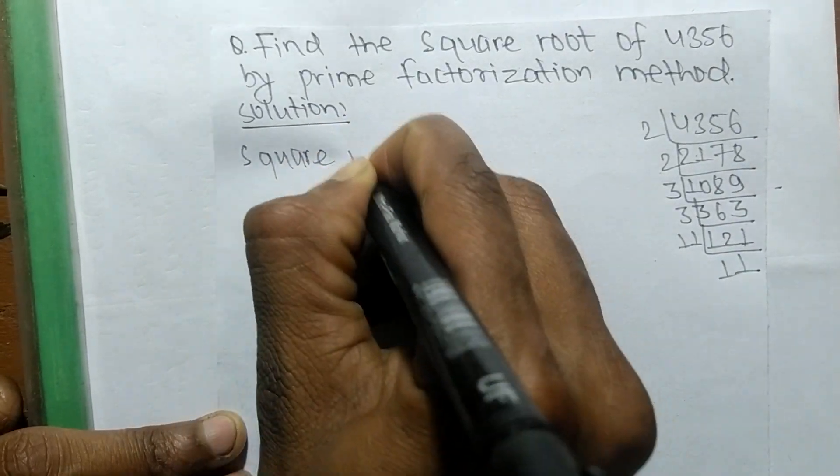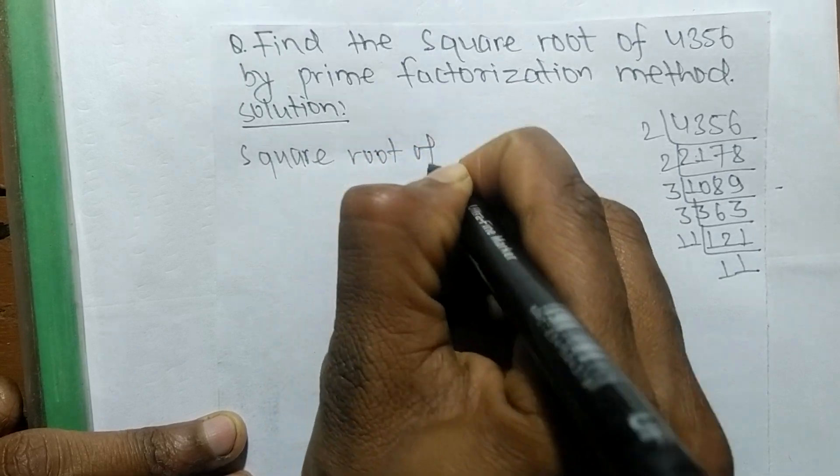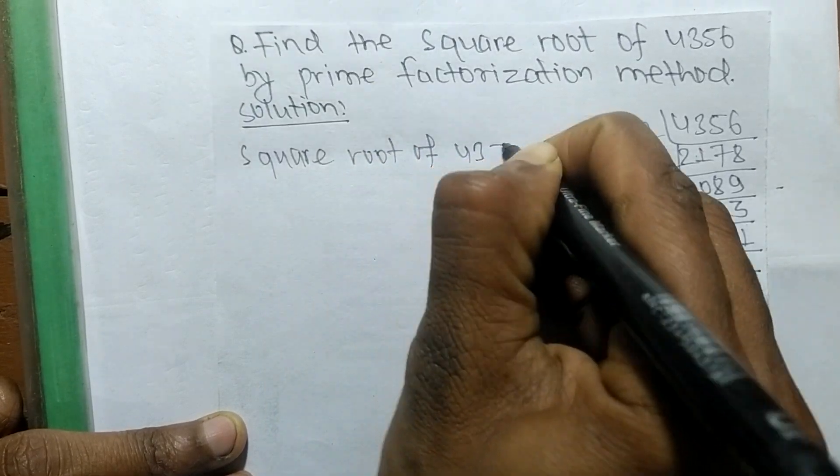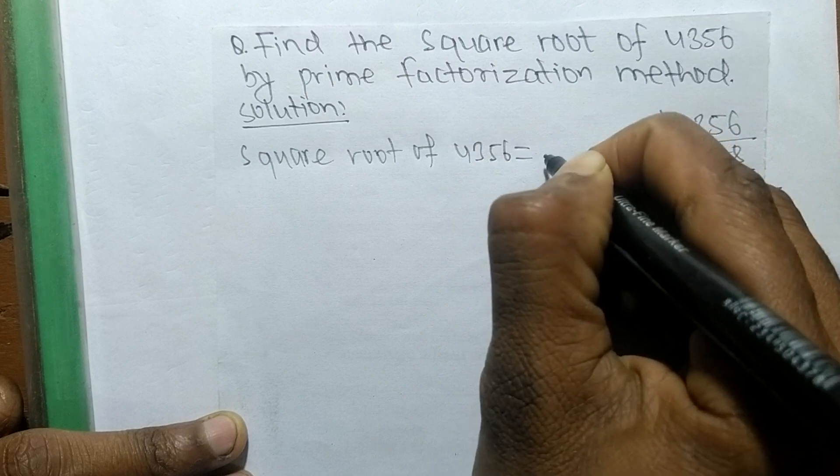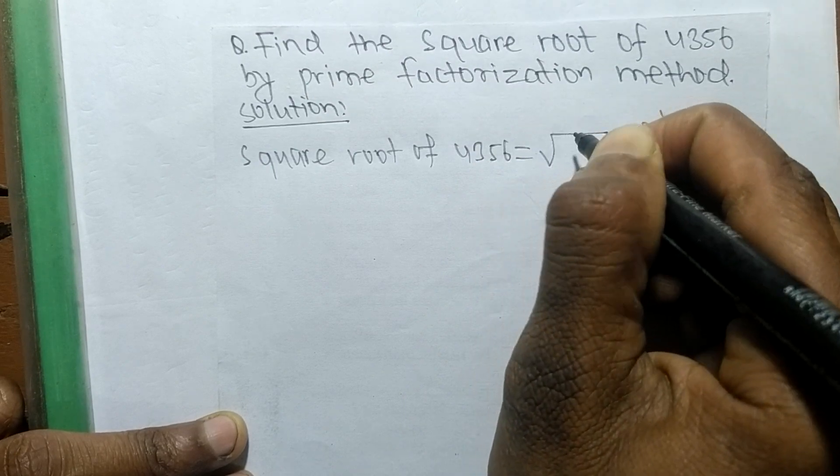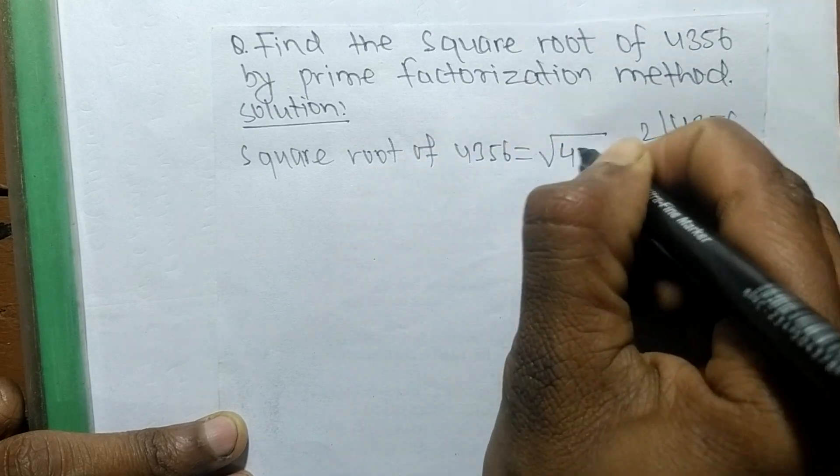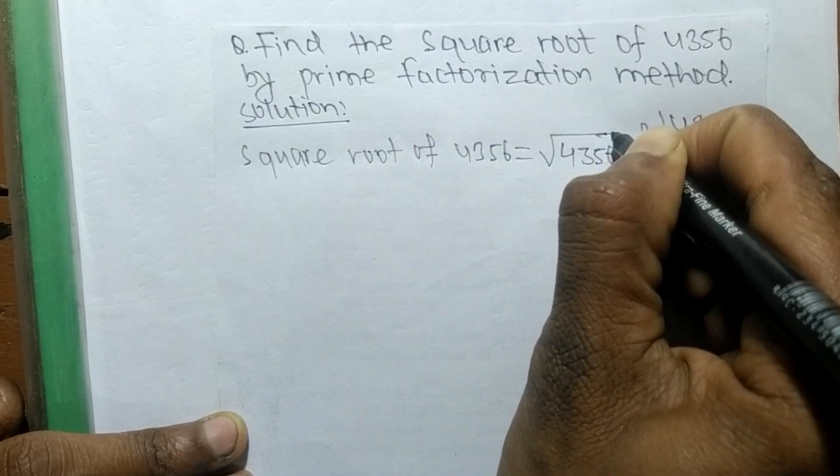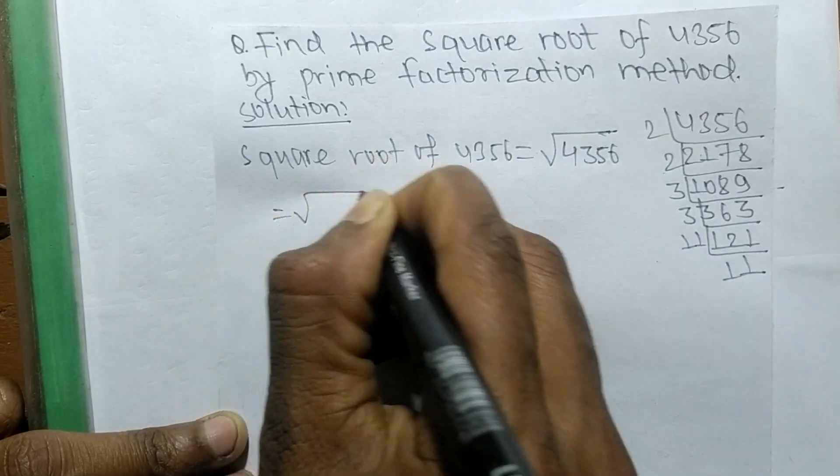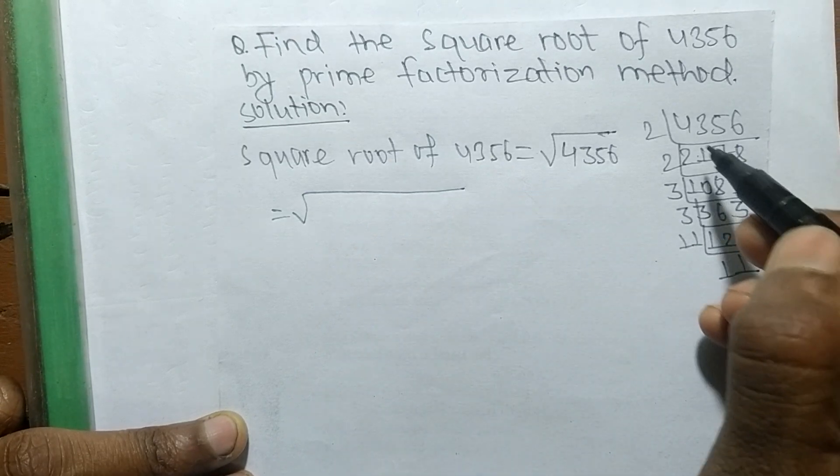So the square root of 4356 is equal to... this sign is the sign of a square root, and we are finding the square root of 4356. Now we write the prime factors of 4356 from here.